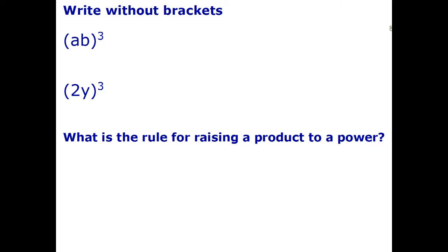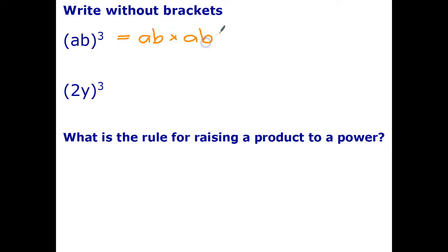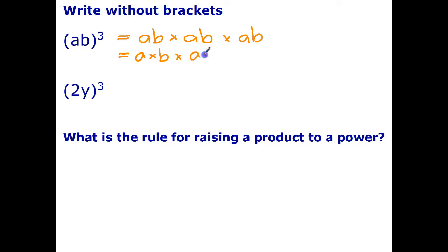Here we have a times b in brackets all to the power of three. So we need to work out how we can write that without the brackets. We can figure it out by expanding. So I've got ab multiplied by ab multiplied by ab, because that's what raising to the power of three means. And of course, ab just means a multiplied by b. So we can expand them even further.